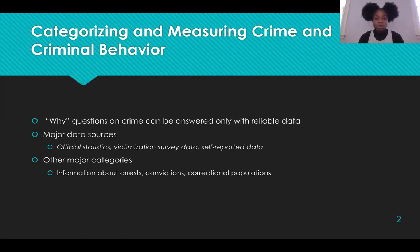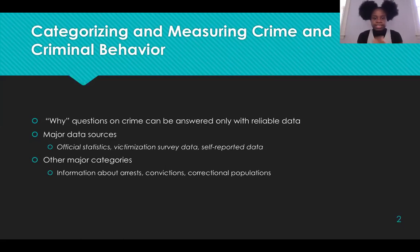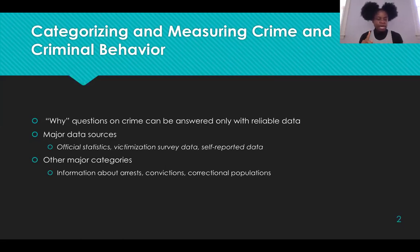There are major data sources that can help us answer these why questions. Major data sources are grouped into three broad categories: official statistics, victimization survey data, and self-reported data. Official statistics — the most basic category — come from calls made to the police by victims, by witnesses, and from crimes discovered by police on patrol.